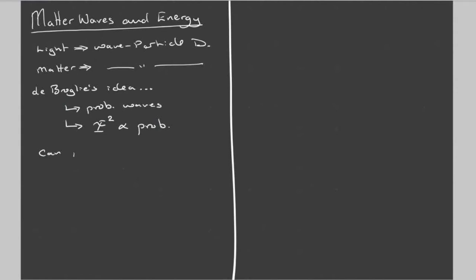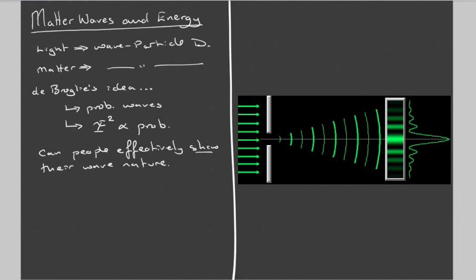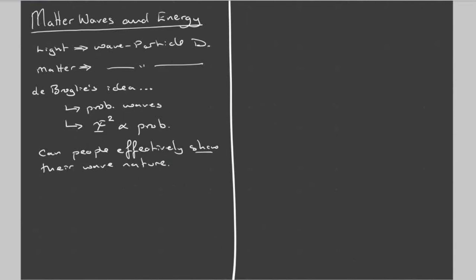We then discussed whether people can show their wave nature, turning to wave effects: reflection, refraction, interference, and diffraction. The one we chose to focus on was diffraction — the spreading out of a wave when it moves through a gap. When people walk through a gap, their wave nature means that's equivalent to a probability wave moving through the gap, and the diffraction pattern gives the probability of locating the person on the other side.